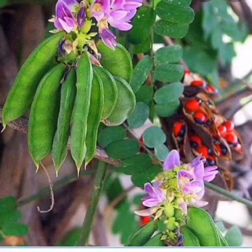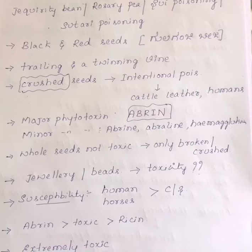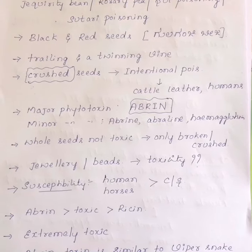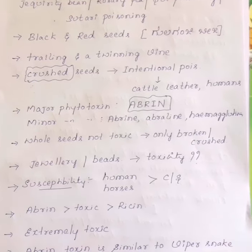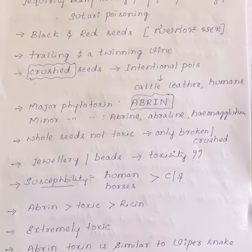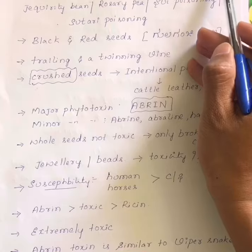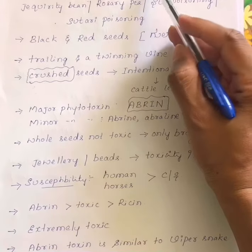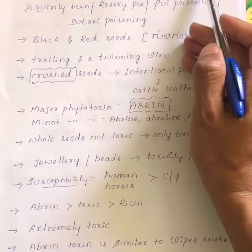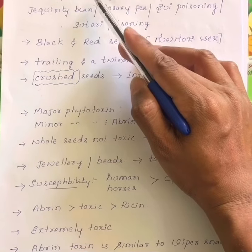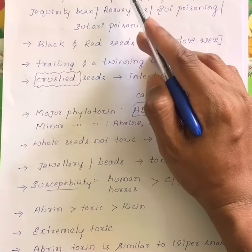Today we will start with the plants containing lectins or toxalbumins. The picture shown is of the Abrus precatorius plant. The second phytotoxin group we are going to discuss is plants containing lectins or toxalbumins. We get two plants which contain lectins and toxalbumins: the first one is Abrus precatorius and the second one is the castor bean plant.